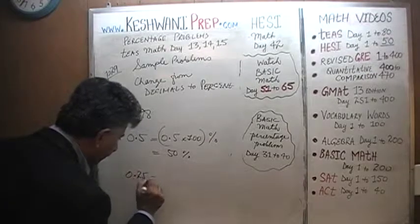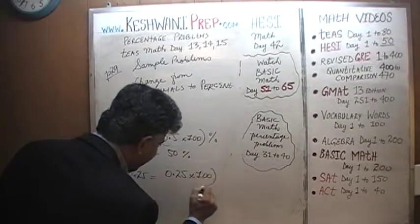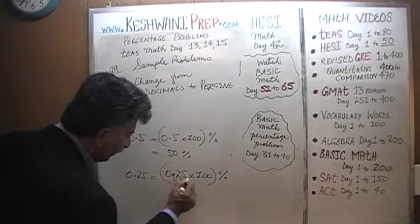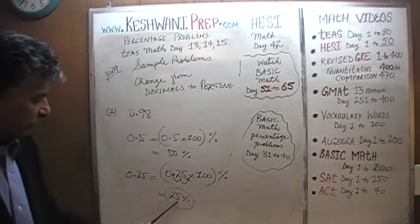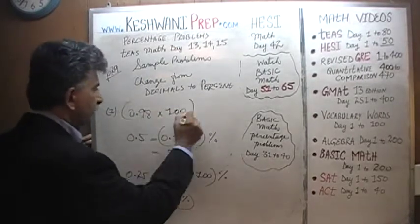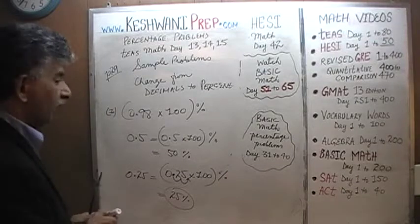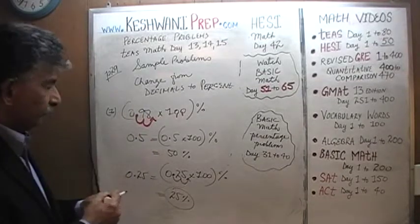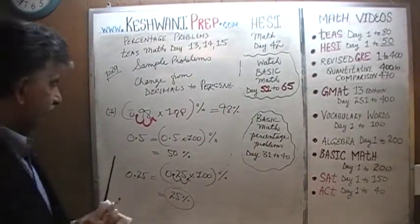Similarly, 0.25 — we know it's 25%. We simply take 0.25 and multiply it by 100. We move the decimal two places — one, two — and it becomes 25%. Same thing applies to 0.98: multiply by 100, move the decimal two places, and it becomes 98%.